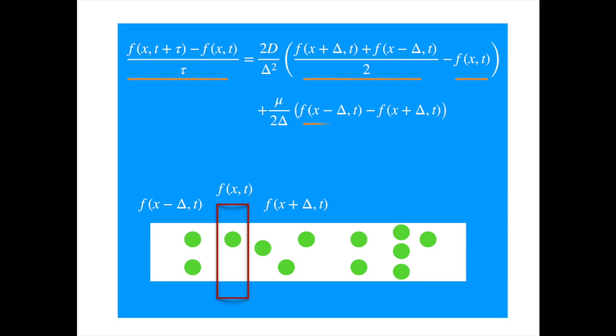And the additional second term means that if the drift is positive, then the location x will be gaining the particles from the left hand side and losing the particles to the right hand side, both proportionally to the drift or convection term.